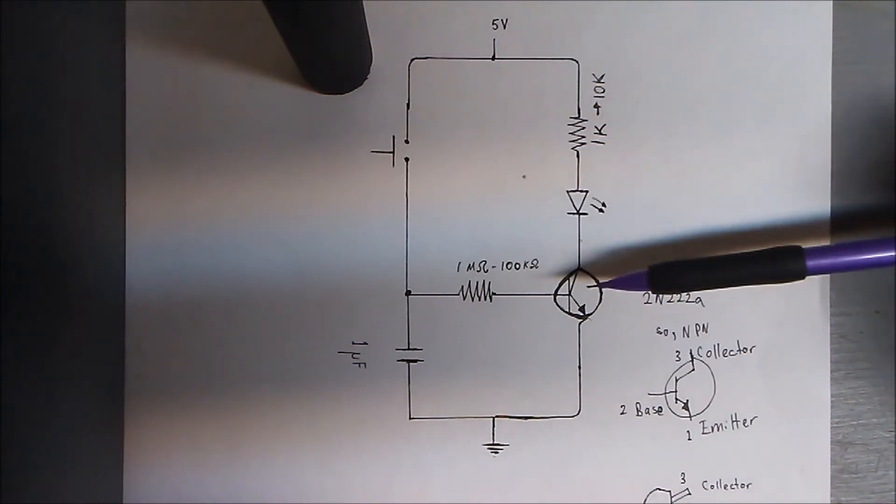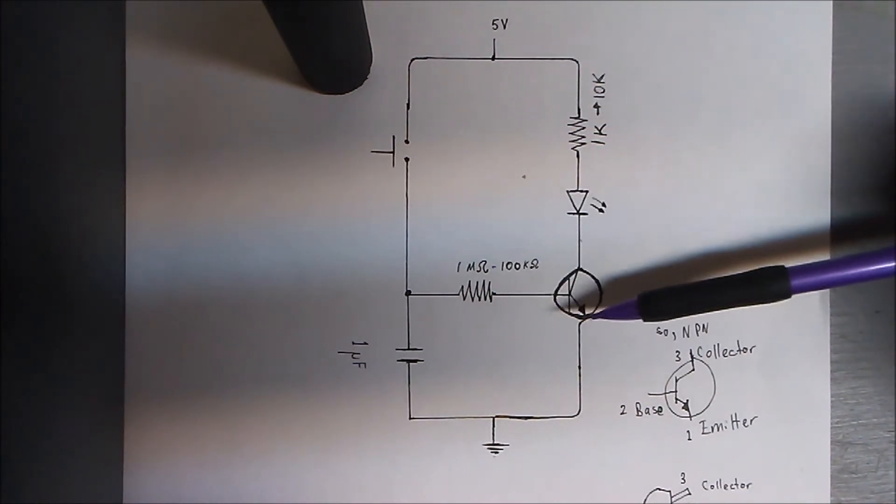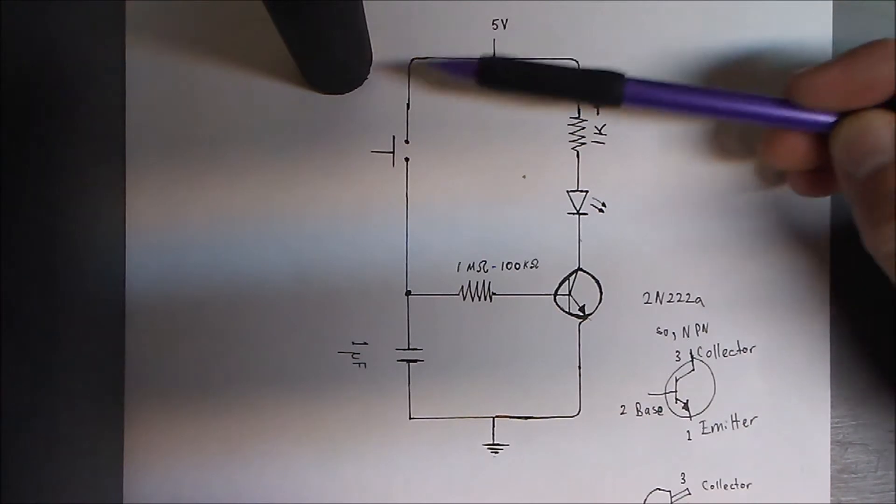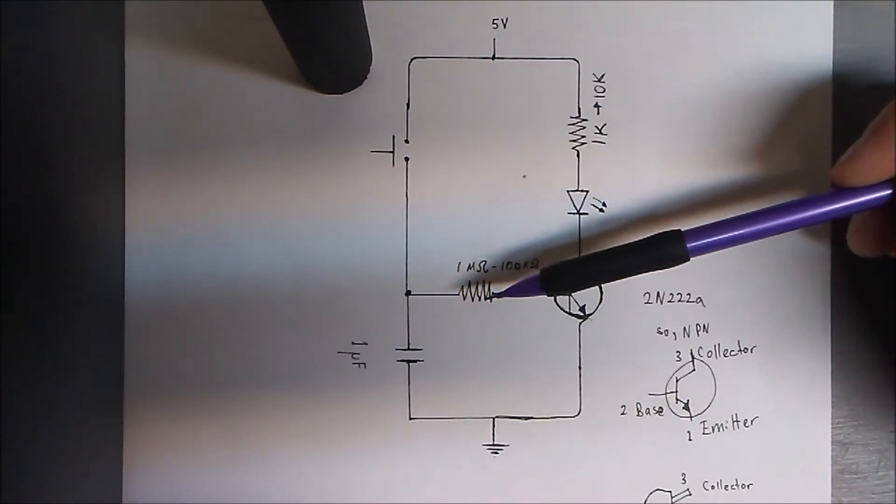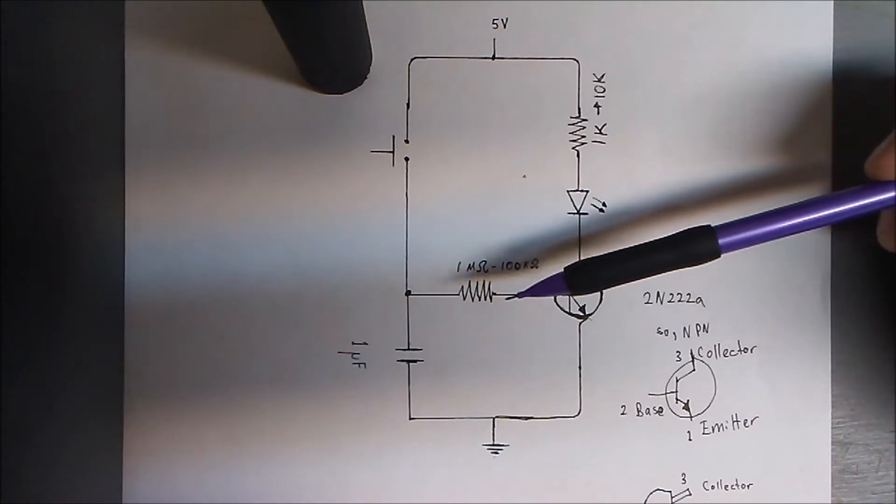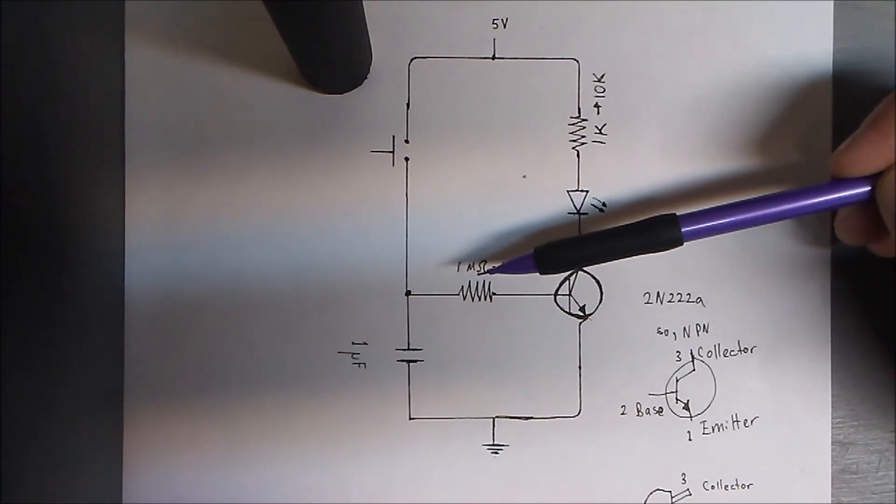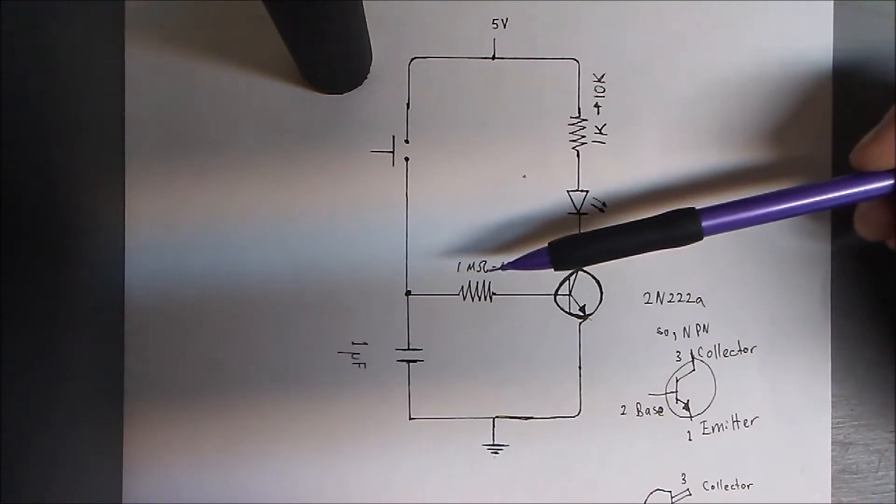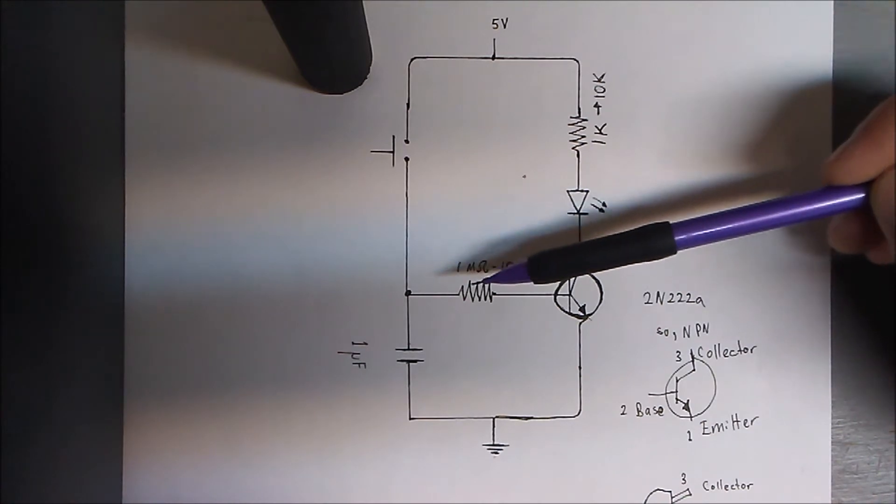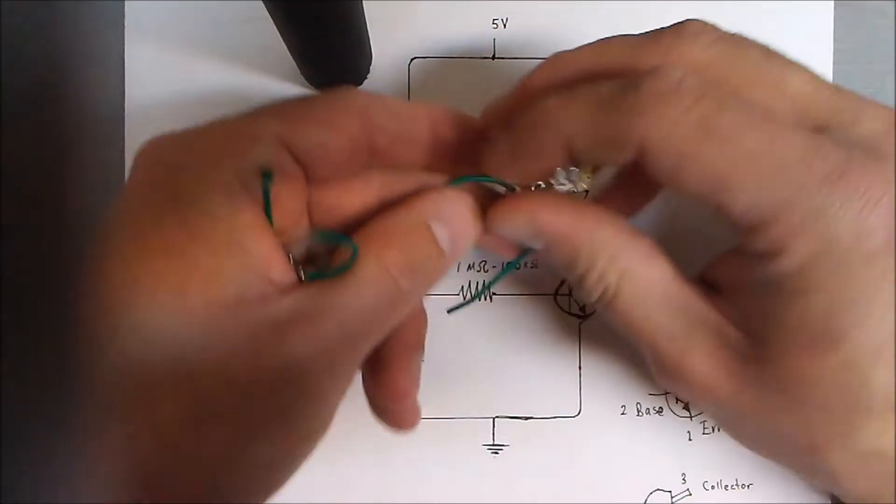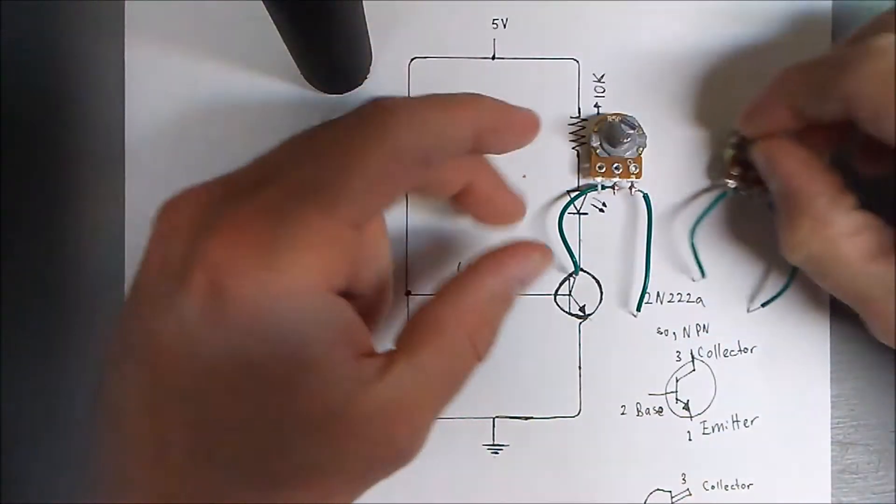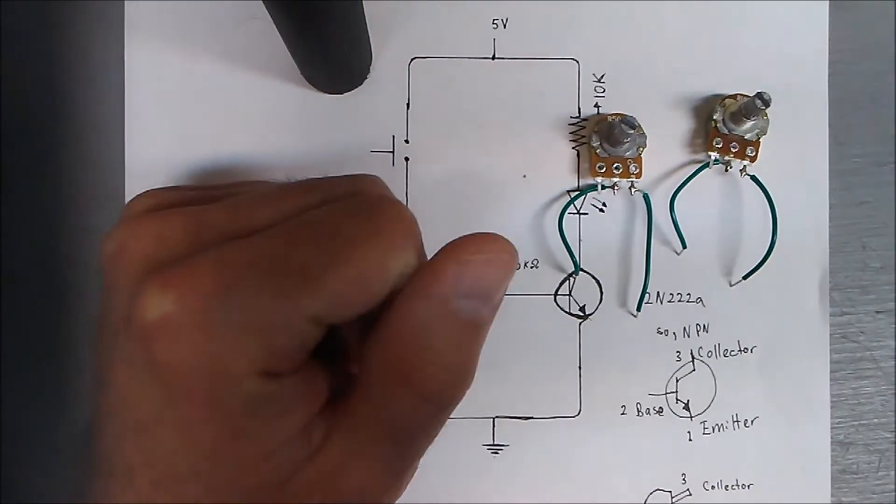Assuming you know how NPN transistors work, this is the collector, emitter, and base. Power is supplied to the base of the transistor through, in this case, a 1 mega ohm resistor. This isn't critical - I actually experimented with various values of resistance. I prepared some variable potentiometers for the sake of experimentation.